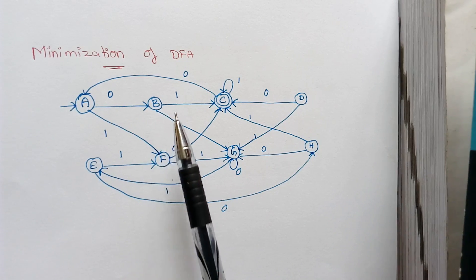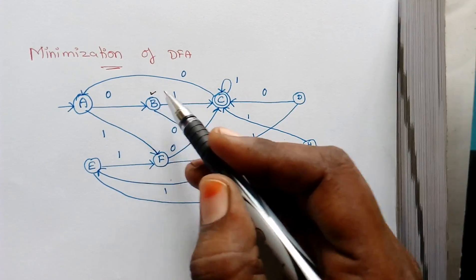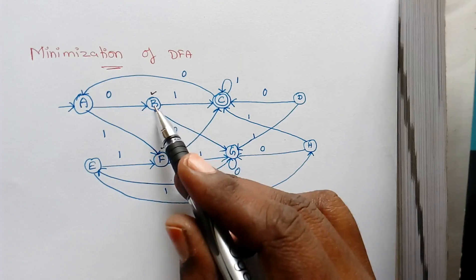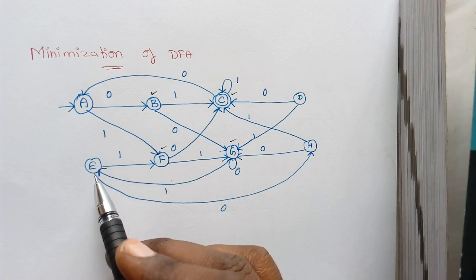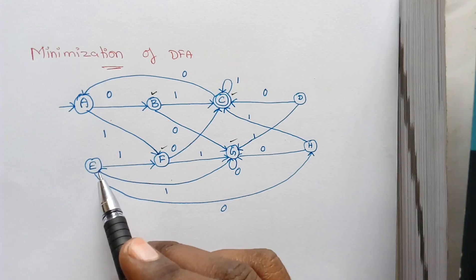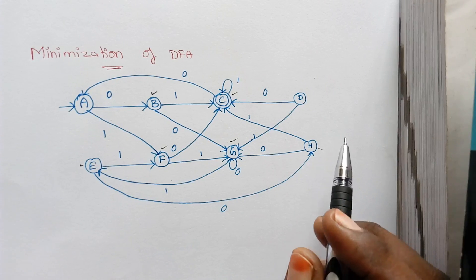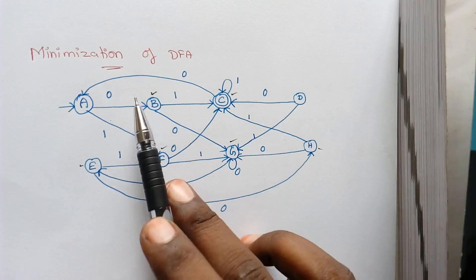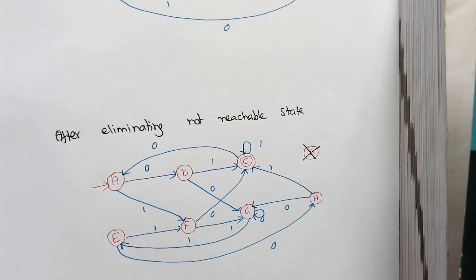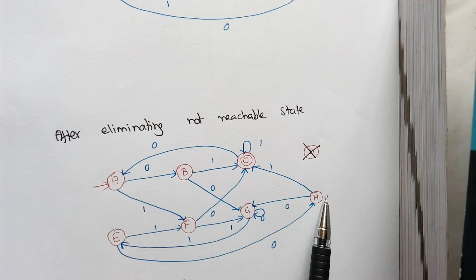From A we can reach B and F. From B we can reach G. So B is reachable, F is reachable, G is reachable, C is reachable. When input is 1, from G we can move to state E, so E is also reachable, and from E we can reach state H. The only state not reachable from the starting state is D. So we have to eliminate D from the DFA. This will be the transition diagram after eliminating D — all remaining transitions stay the same.